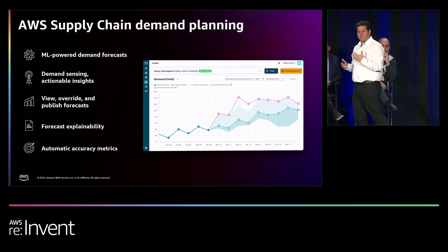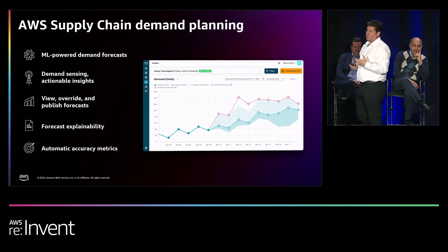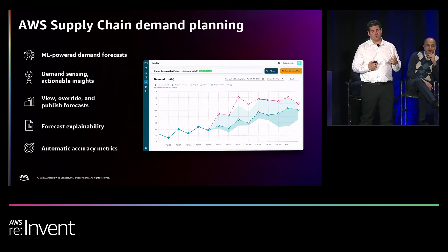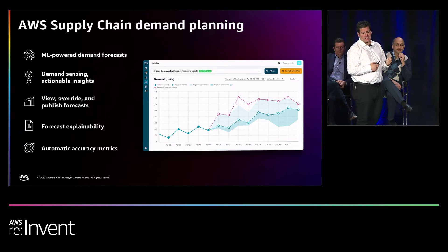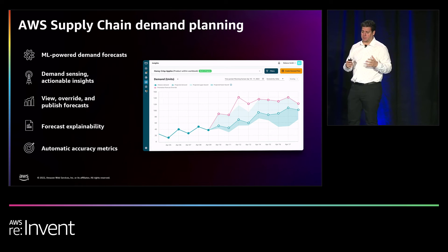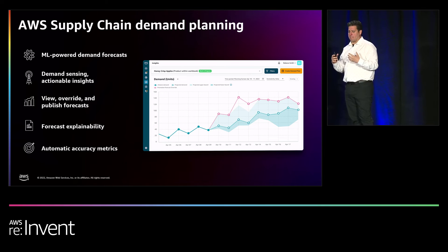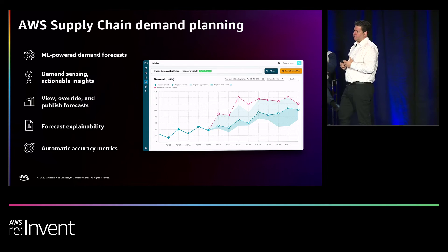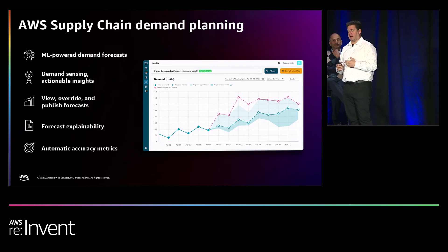Also with the solution, we have AWS Supply Chain Demand Planning — a module that uses machine learning algorithms to generate a highly accurate demand forecast. It removes the guesswork out of forecasting and allows your demand planners and team to view, manage, and collaborate on the forecast, helping the team generate a consensus for the demand plans.